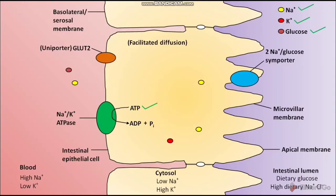The net result of this two-stage process is movement of Na+ ions and glucose from the intestinal lumen, across the intestinal epithelial cell, and into the blood. In between two adjacent intestinal epithelial cells, a tight junction is present. The tight junction prevents the diffusion of Na+ and glucose back into the intestinal lumen. As a result, the Na+ and glucose move into the blood.